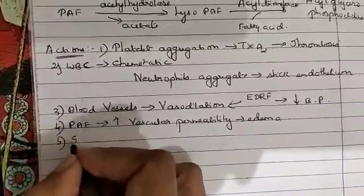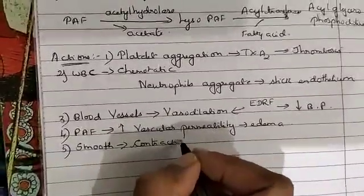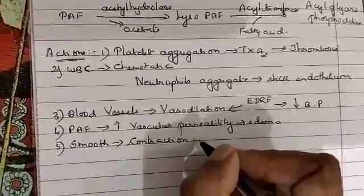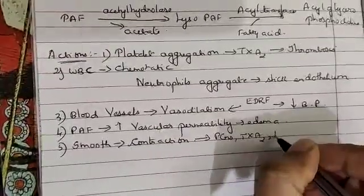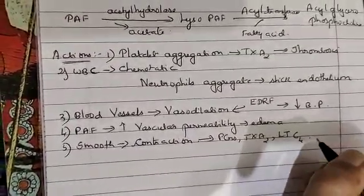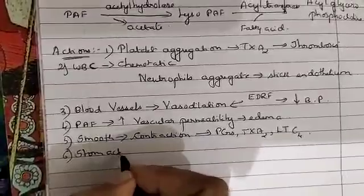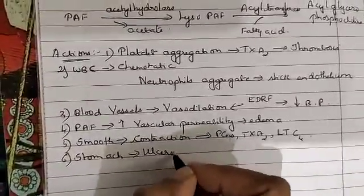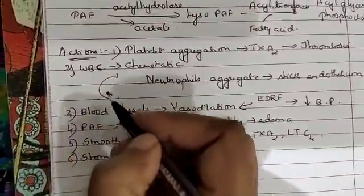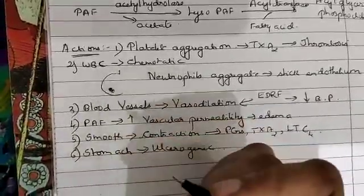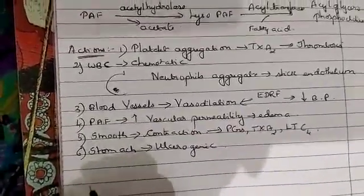The next action is on smooth muscles, where PAF causes contraction. This may be due to the release of prostaglandins, thromboxane A2, or leukotrienes — especially leukotriene C4. The next action is on the stomach, where PAF is ulcerogenic, meaning it causes erosion and bleeding at that particular site.